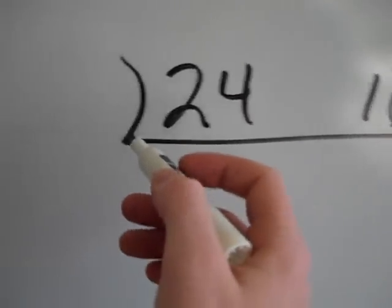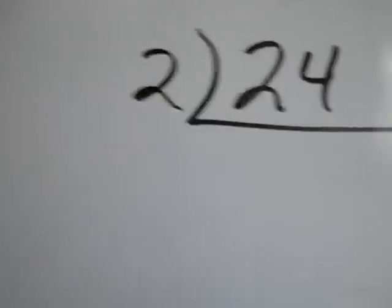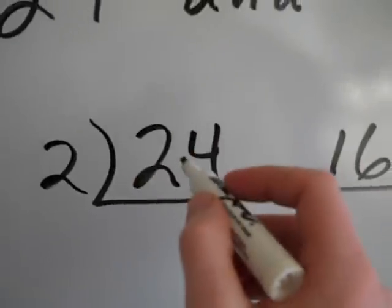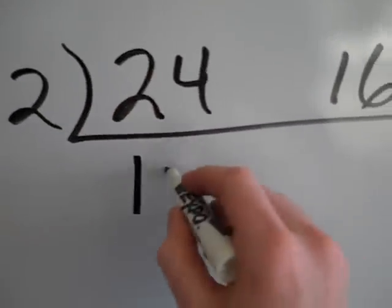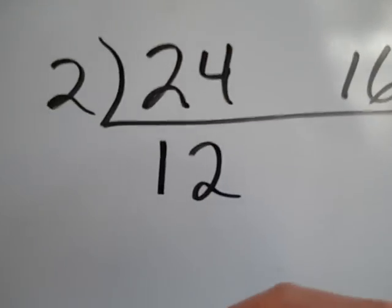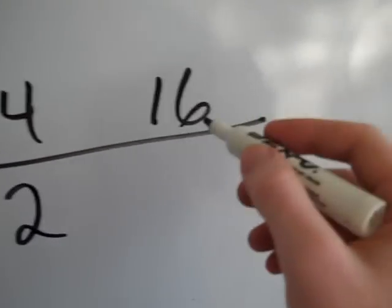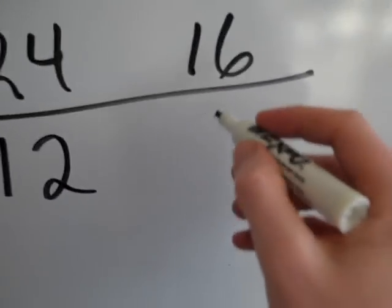So if I look at both, I know they're both even, so I can divide by 2. 24 divided by 2 is 12. You're going to write that number underneath, since it's an upside down division box. 16 divided by 2 is 8.